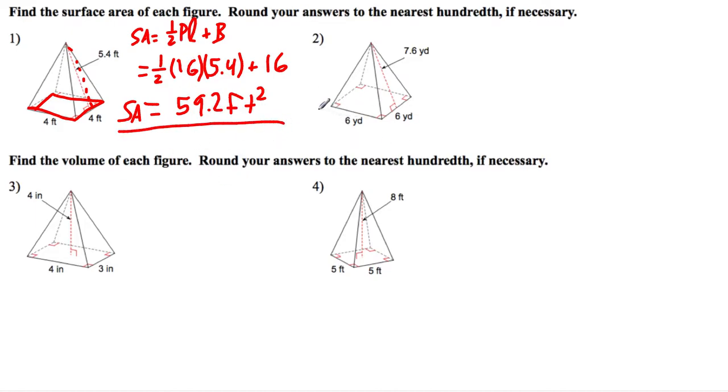For this next example, again, we have another square base here. So the surface area is one-half the perimeter of the base times the lateral height plus the area of the base. So this is one-half of that perimeter, which again is 6 plus 6 plus 6 plus 6, which is 24. The lateral height that they give us is 7.6. And we add the area of the base, which is 6 times 6, or 36.